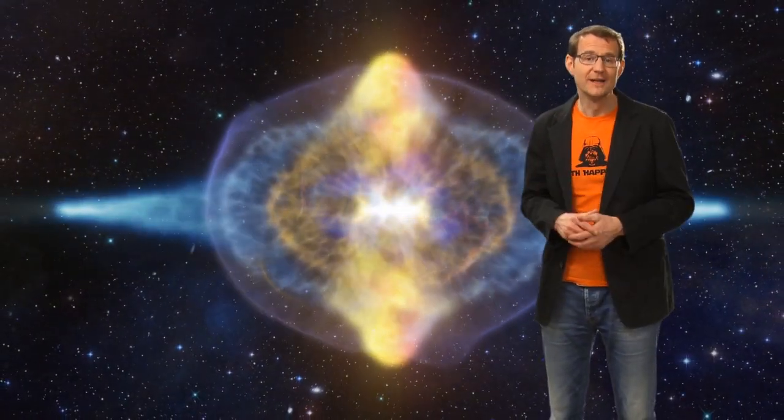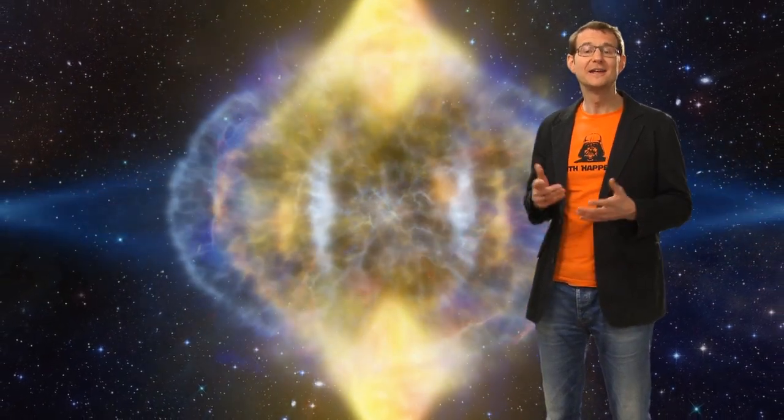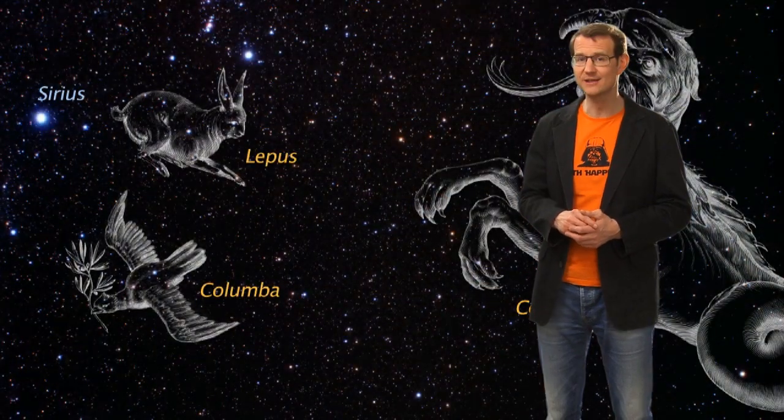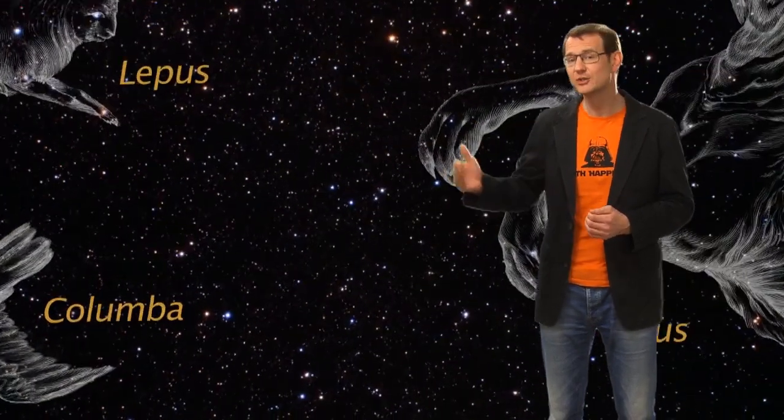Supernovae are extremely bright. In fact, they are so bright that they usually outshine their entire host galaxies. And that is why it's relatively easy to detect them even out to large cosmological distances. In 2011, the Nobel Prize in Physics was awarded to two teams that measured the brightness of many supernovae to map out their distances. And what they found was that the far away supernovae were surprisingly faint, which could only mean that they were even more distant than expected.